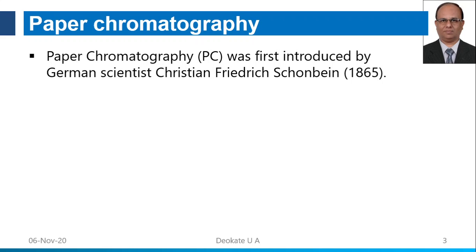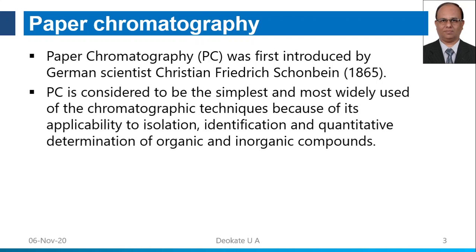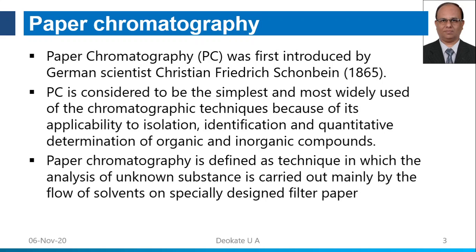Paper chromatography was first introduced by German scientist Christian Schorben in 1865. It is considered to be the simplest and most widely used chromatographic technique because of its applicability to isolation, identification, qualitative and quantitative determination of organic and inorganic compounds.